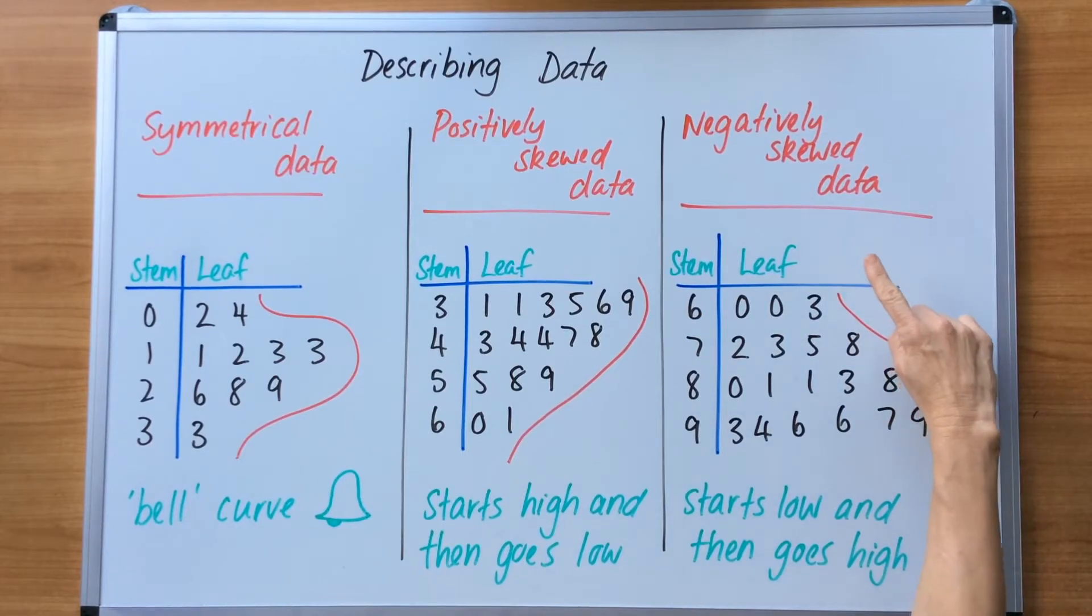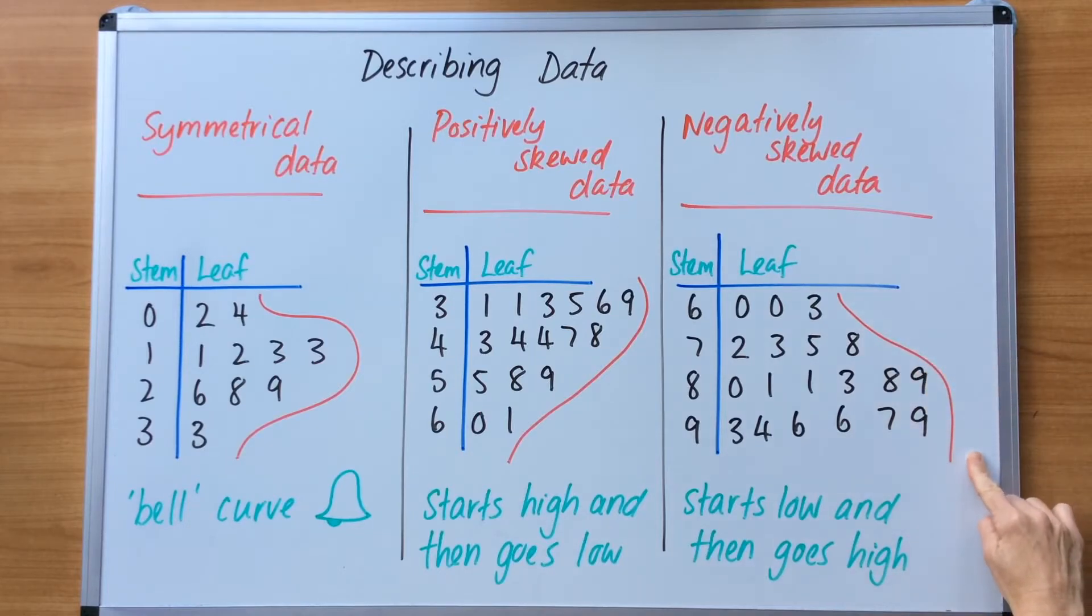Negatively skewed data will actually start low and then increase in value. It starts low and then goes high.